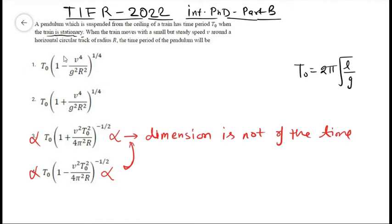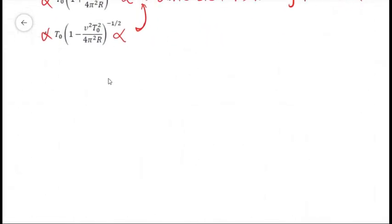These cannot be the correct options, so we are left with only two options. Now see, if this is the pendulum and the pendulum is acted upon by some force, then the force will not be in the downward direction, so it will point in some other diagonal direction.